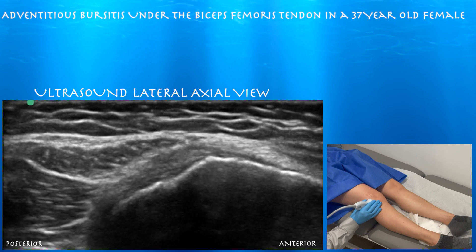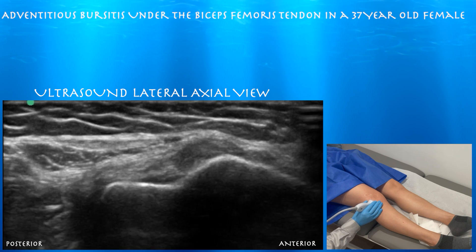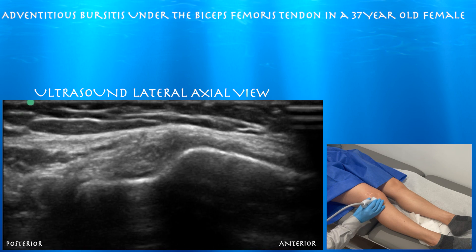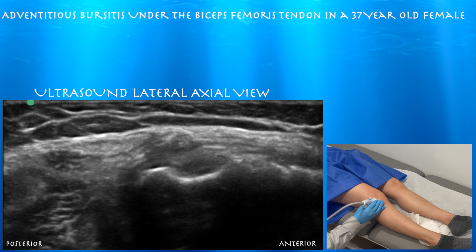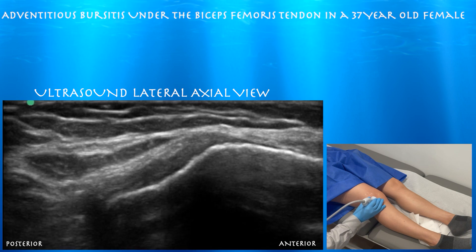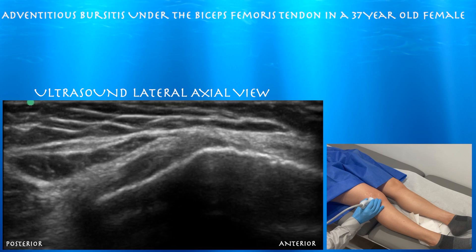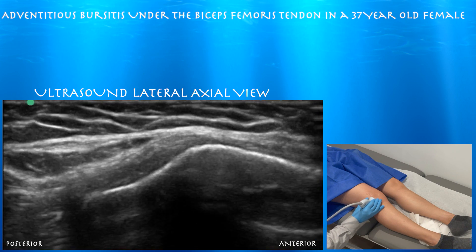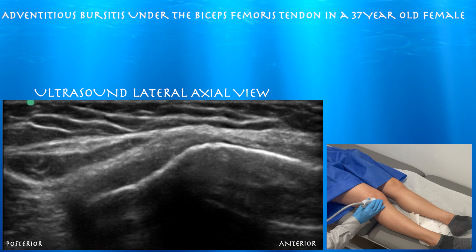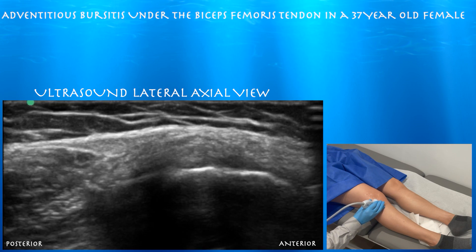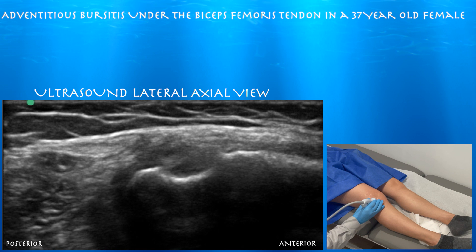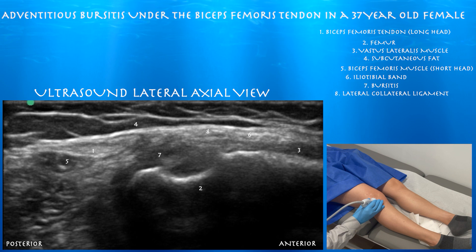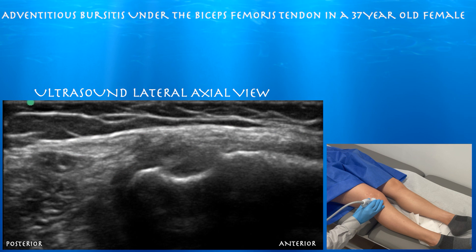Moving distally, here we can see that bursitis in an axial cross-sectional view — how it just kind of juts under the biceps femoris tendon and muscle. That's one of the nice things about ultrasound: you can really target and focus your exam on where she's tender. You can appreciate that bursitis on the anterior aspect of the biceps femoris tendon and just near the muscle — the short head of the biceps femoris.